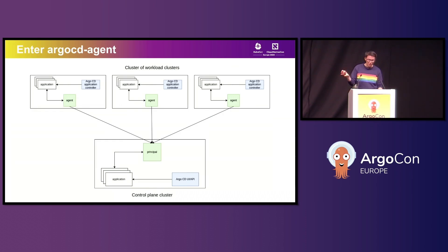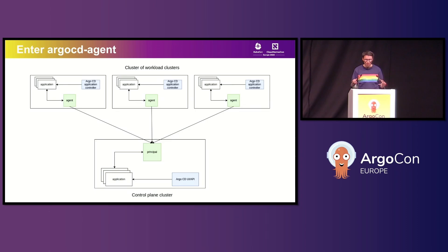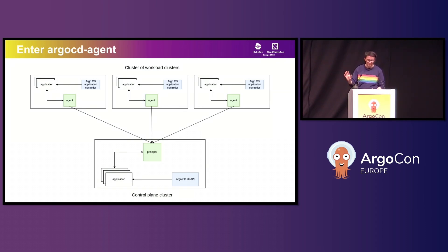By default the agents and the principal talk to each other using gRPC over a connection secured by mTLS. In a nutshell, the principal will let the agent know about changes to the application spec, while the agents will let the principal know about changes to an application status. In reality there's a bit more to it — the sync protocol allows for different things like triggering Argo CD operations and refreshes, and the agents can run in alternate modes like an autonomous mode where the sync protocol acts a bit differently.